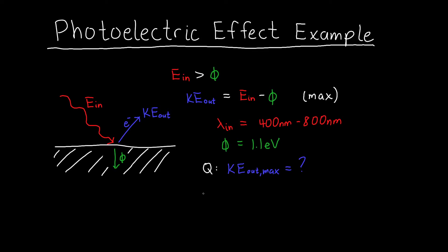And so what I want to know is, what is the maximum incident energy of my incoming photons? Once I know this, I can plug it into this equation because I know the work function, and I can figure out the output kinetic energy. So the question is, which wavelength is going to correspond to a higher energy? Is it the short wavelengths or the long wavelengths?